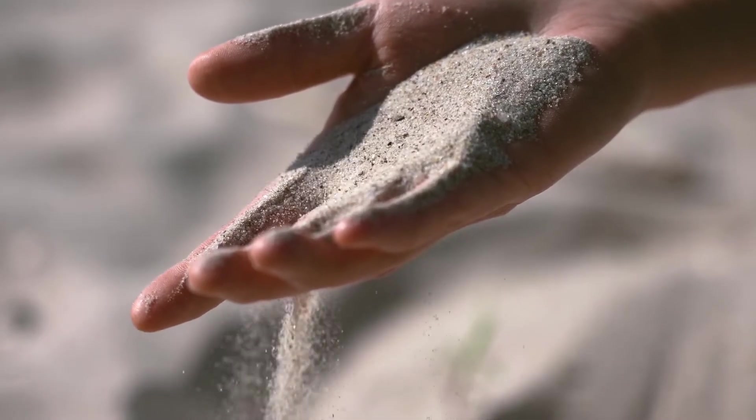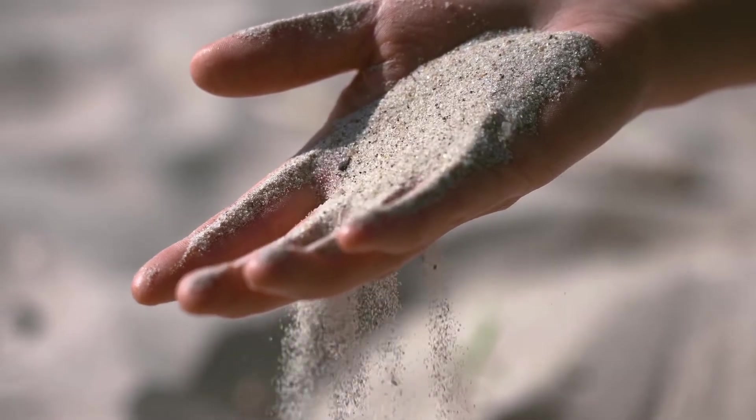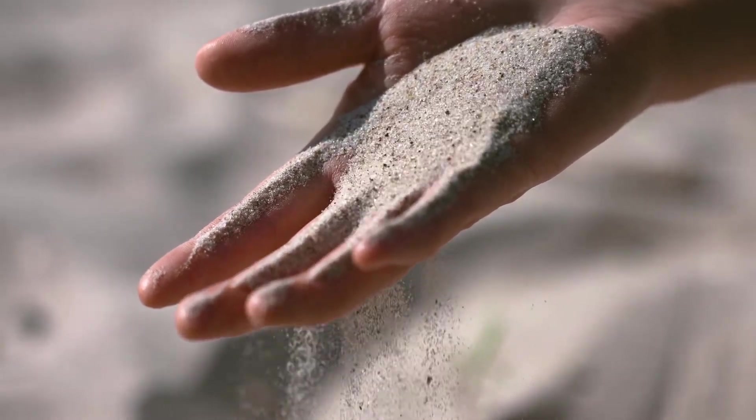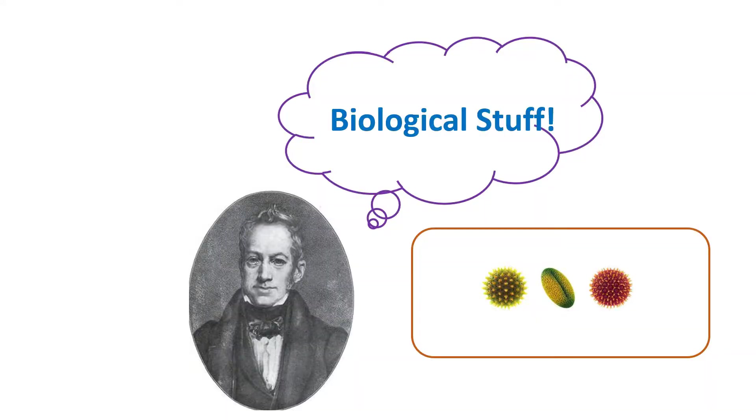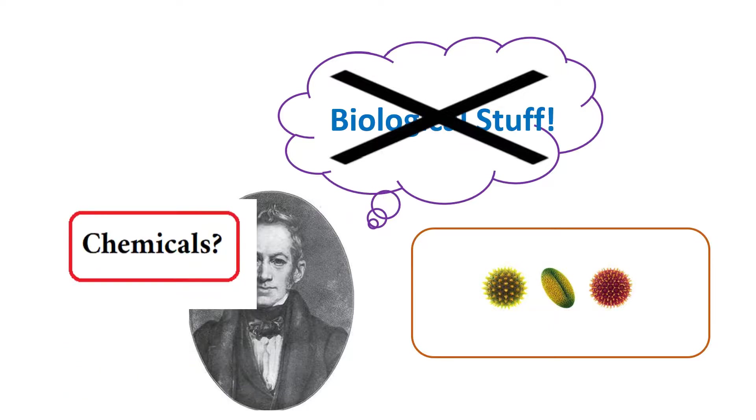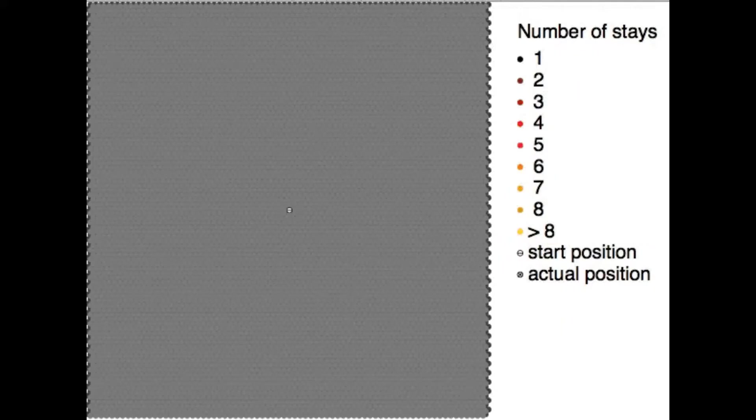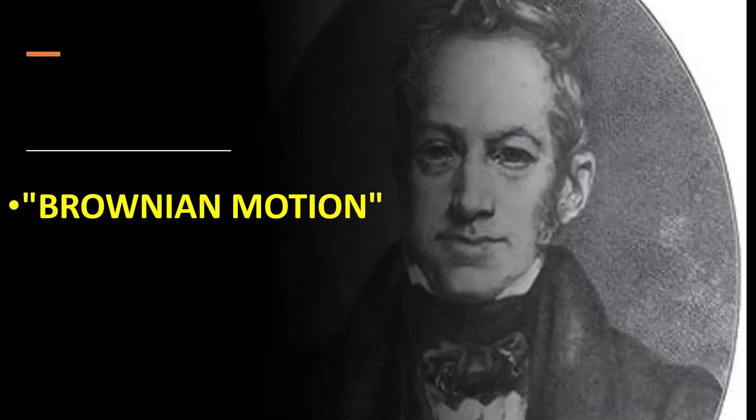But when he repeated the same experiments with dust particles and sand, he observed the same motion. So it was not related to any kind of biological or chemical effect. The small particles inside the fluid were going here and there in a completely random way. The motion was named Brownian motion after Robert Brown who discovered it.